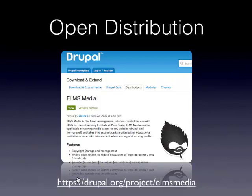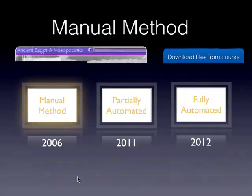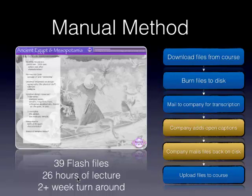Let me go through the evolution of our transcription process to show how we got to where we are today. Back in 2006, we had a very manual method. A faculty member had created 39 Flash files, and we had a student with an auditory disability who needed all of this transcribed. We had to burn all those files to a disk and physically mail them to a company. It was 26 hours of lecture, it took two weeks to come back, and it was actually open captioning — not even closed captioning — so everybody had it with no way to toggle it.